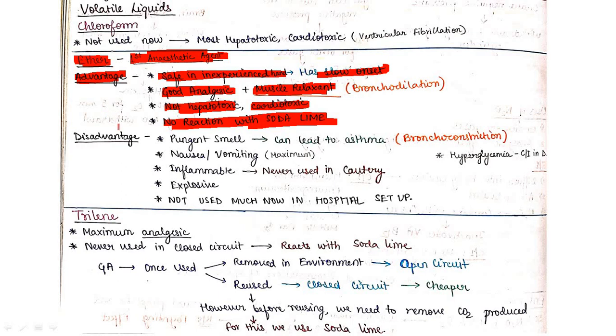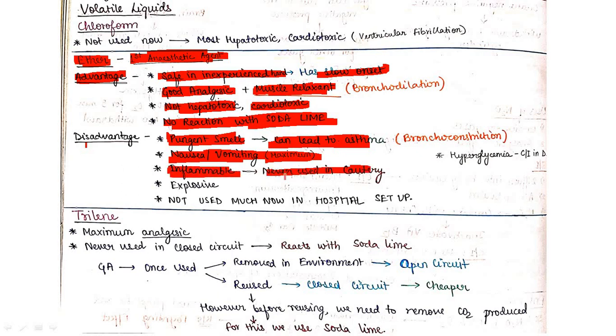Disadvantages of ether: it has a pungent smell so can lead to asthma, causes nausea and vomiting (maximum with ether), is inflammable in nature so never used in cautery, and is explosive. It's not used much now in hospital settings.